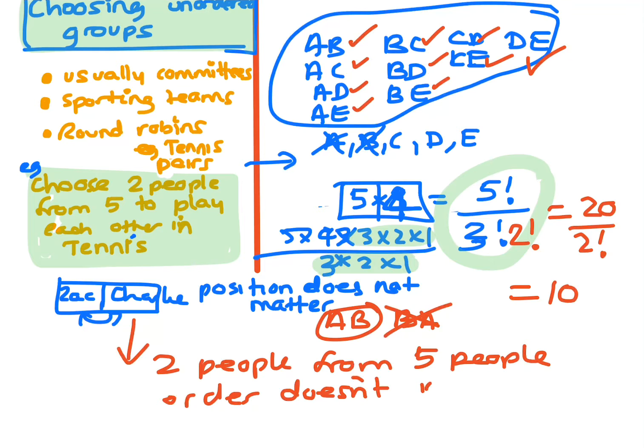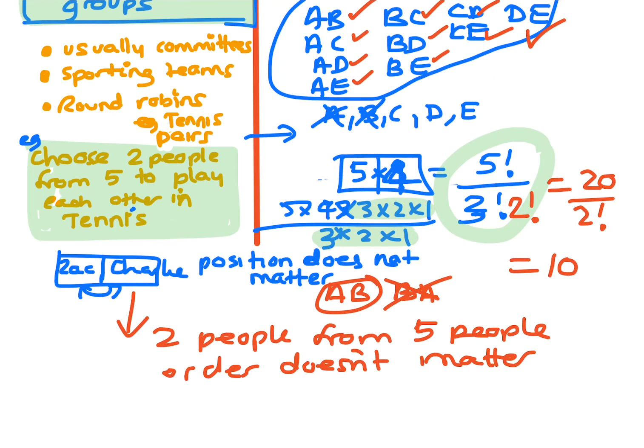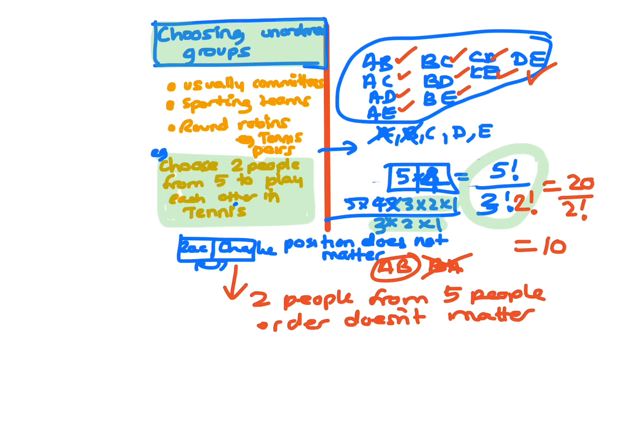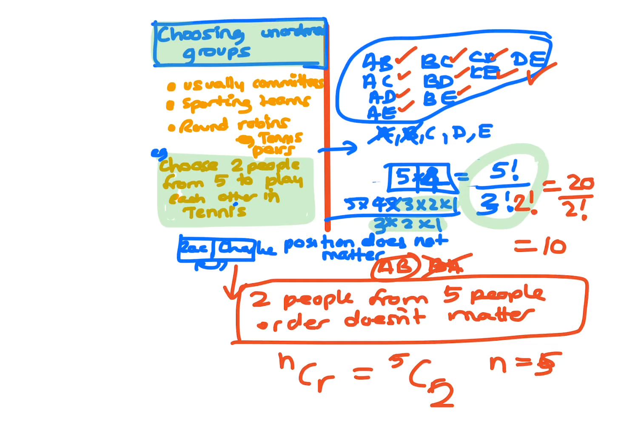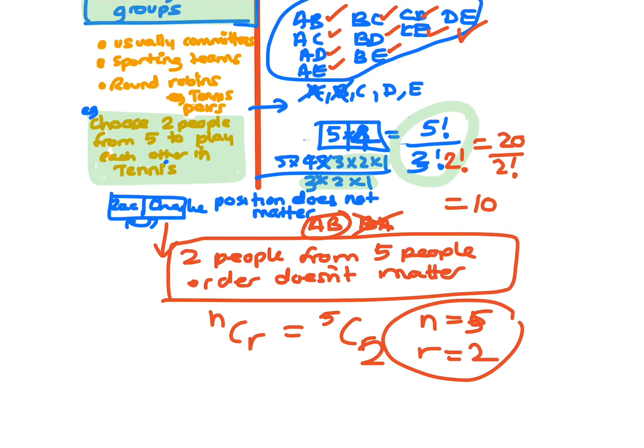If the order mattered, you can use the box method. You can use the NPR, but sometimes if you've got restrictions, that's only for nice straightforward ones. If you've got restrictions, it can get you into trouble. So use the NCR button, so go 5C2, because the N is equal to the 5, that's what you're choosing from, and the R is equal to the 2, that's the number of people you're choosing.